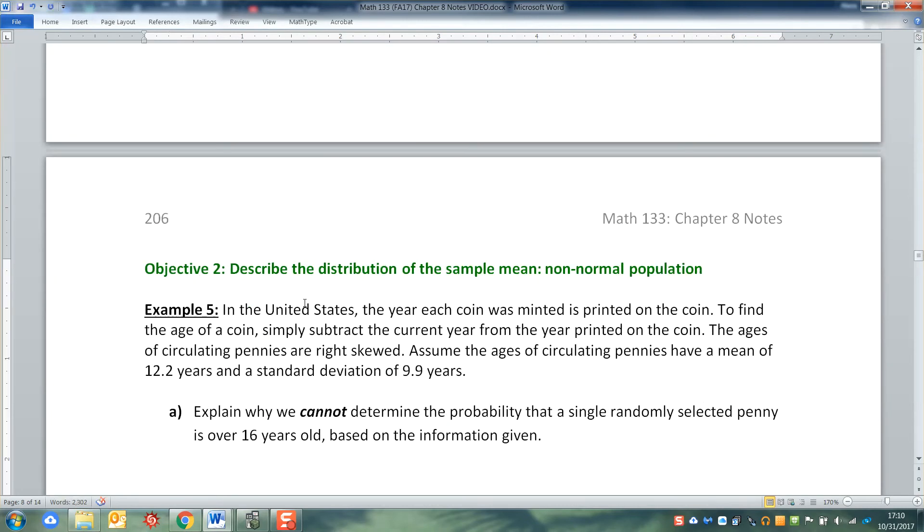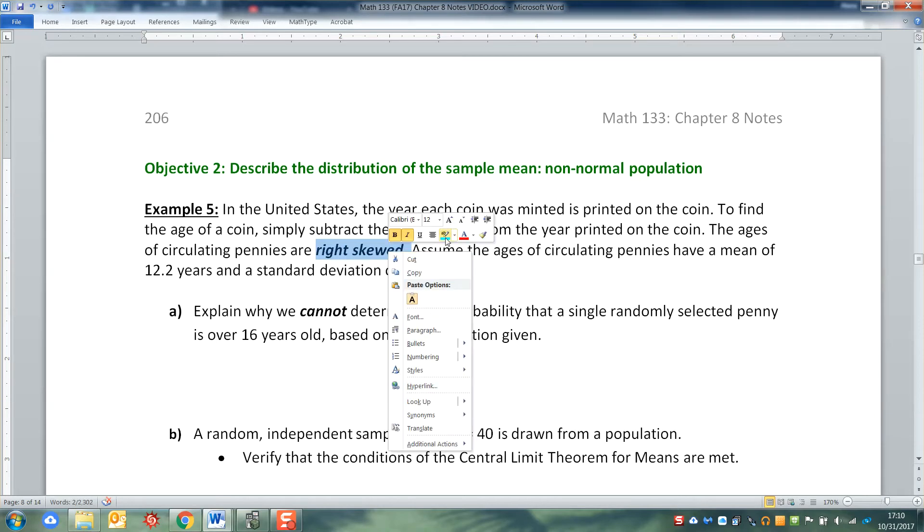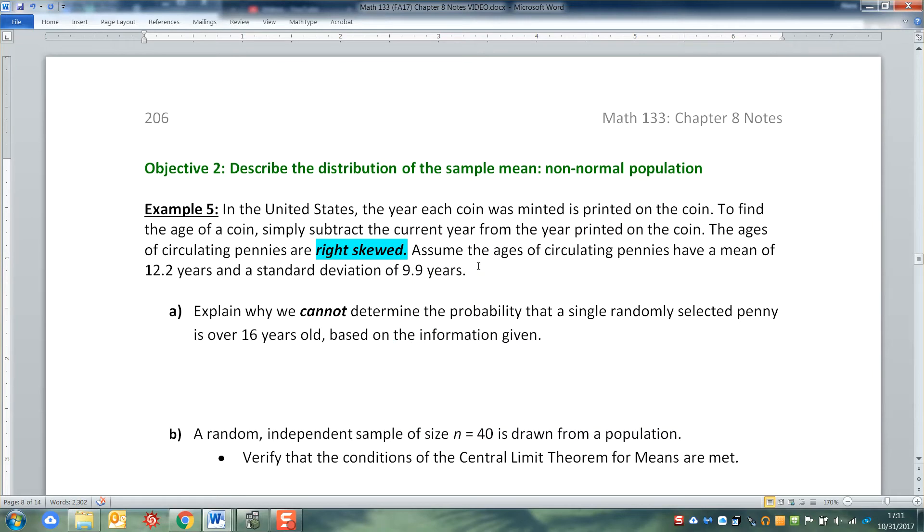Last example here. So we want to look at this example which is in the United States, the year each coin was minted is printed on the coin. We want to find the ages of a coin, you simply subtract the current year from the year printed on the coin. So for example, if I know that a coin was printed in 1974 and it's currently 2017, I would take 1974 minus 2017, I would get 43. Or if it was 2000 that was printed and it's 2010 right now, 2010 take away 2000 would get me an age of 10. Now we know that that's right skewed. Most coins are within the last 20, 30 years of minting. And then as you get older and older, it tails off. It becomes kind of a right tailed thing because there are very few coins out there that are very, very old.